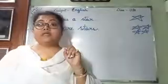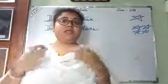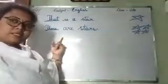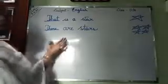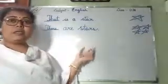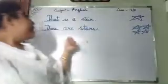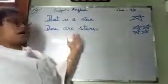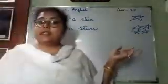One thing near to you — you will say 'this'. One thing far from you — you will say 'that'. More than one thing near to you — you will say 'these'. And more than one thing far from you — you will say 'those'. This is the concept. Here also the same: if 'that' is written, always beside 'that' there will be 'is'. And beside 'those', always 'are'. You cannot say 'those is' — no. Those are. And that is.